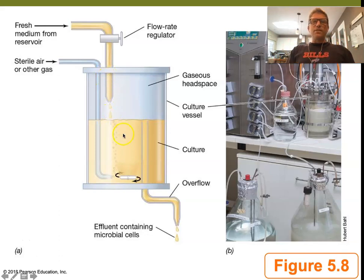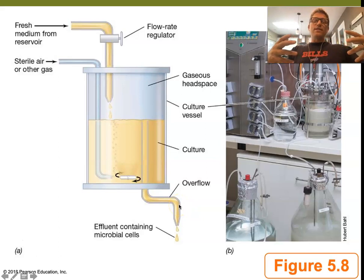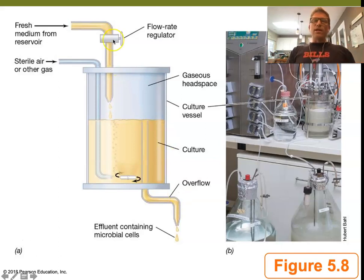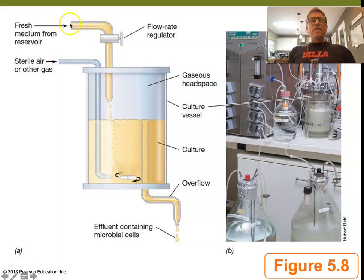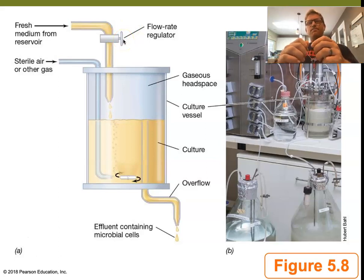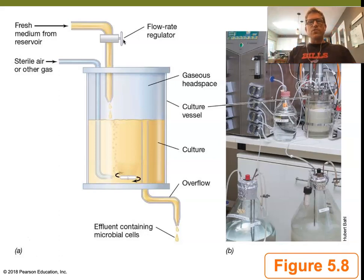For every milliliter that comes in, a milliliter goes out. That creates space — new opportunities for microorganisms to grow and divide. Whatever our key limiting nutrient is, whether that's phosphorus, nitrogen, iron, or glucose, that concentration is controlled in your fresh medium reservoir. You've got a flow rate regulator, and it's usually controlled digitally so you can be very, very precise.